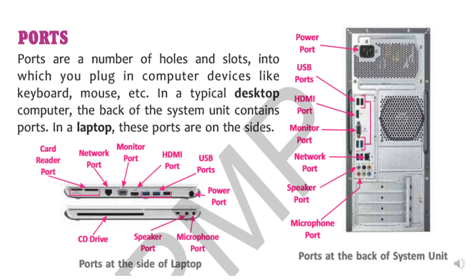USB ports are used to attach a USB keyboard or mouse. Then there is the HDMI port, which is used to attach the HDMI wire. After that, the monitor port is where we attach the wire coming from the monitor. Then we have the network port for the internet wire, and speaker ports and microphone ports for the speaker and microphone. These ports are also available on laptops, but on the sides.